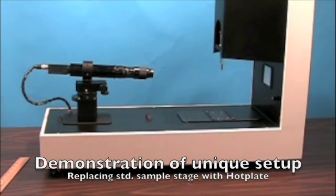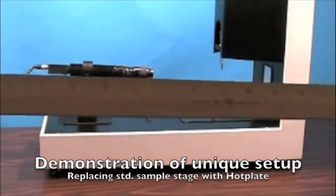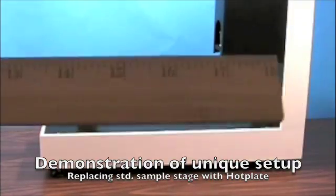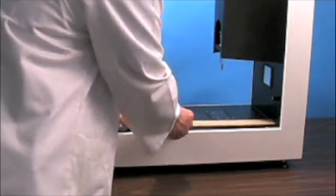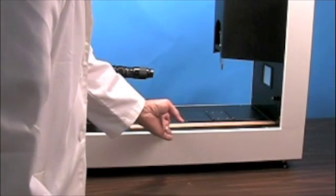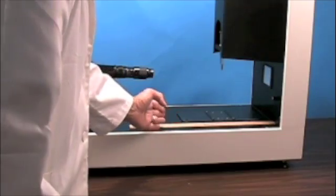This is the contact angle analyzer, the Phoenix 300 Plus. From a distance perspective, we have a ruler here that's 18 inches, and we definitely have at least a good 15 inches from here to here.